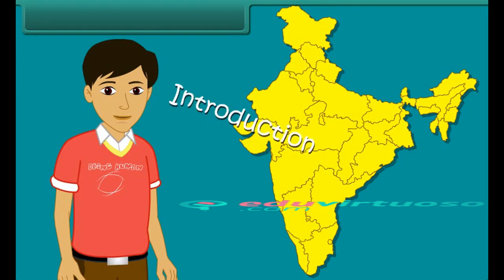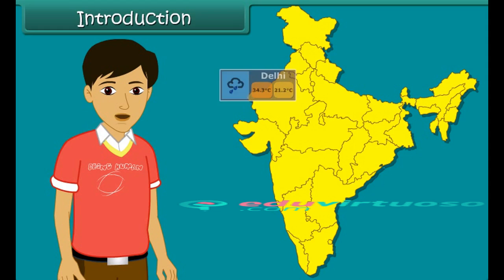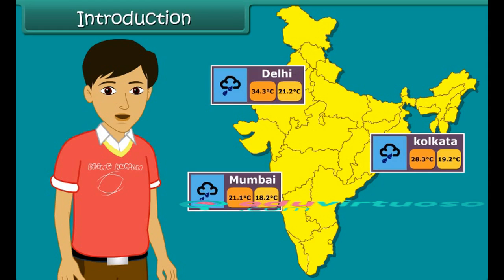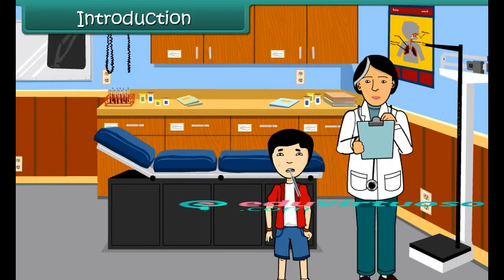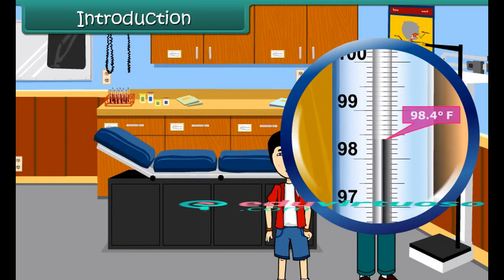Introduction. Have you seen how news channels report maximum and minimum temperatures of a particular place on a particular day? 34.3 degrees Celsius, 21.2 degrees Celsius. When you go for your regular check-up, does your doctor check your body temperature and report it as 98.4 degrees Fahrenheit?